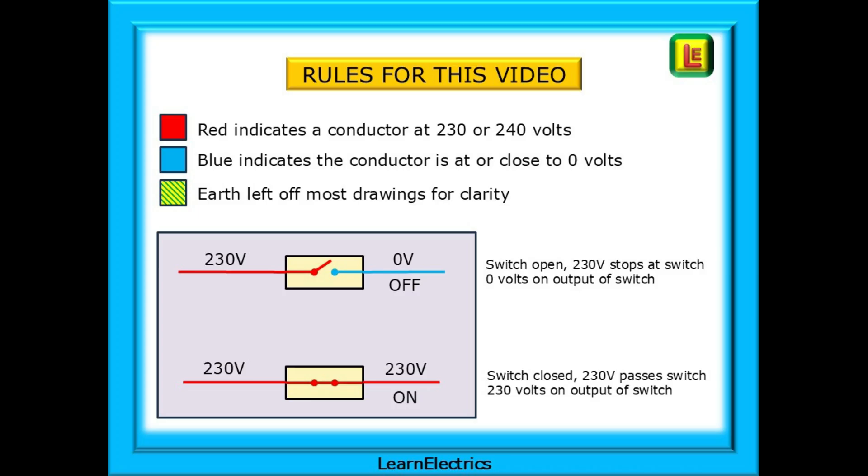The box shows a switch. With the switch open in the off position, the 230 volts stops at the switch. But with the switch closed in the on position, current can flow through the switch and the output becomes 230 volts.